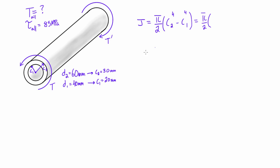And C2 here is 30mm, but we want this in meters, so we'll go 0.03 meters. That's all to the power of 4 minus C1, which is 20mm, so 0.02 meters all to the 4. And when we crunch that, we're going to get that is 1.021 times 10 to the minus 6 meters 4.